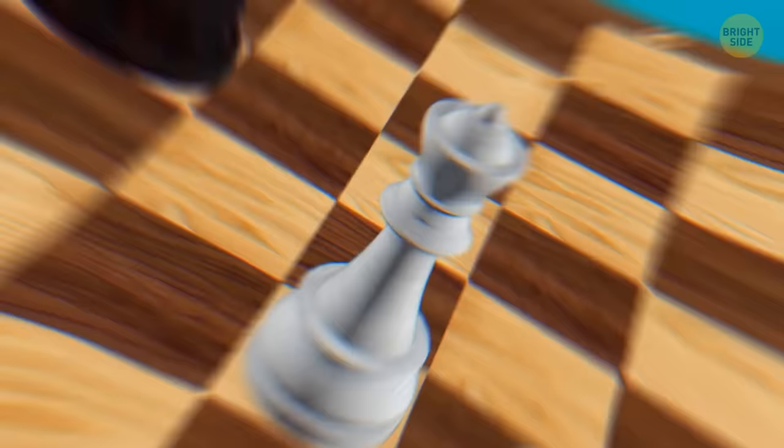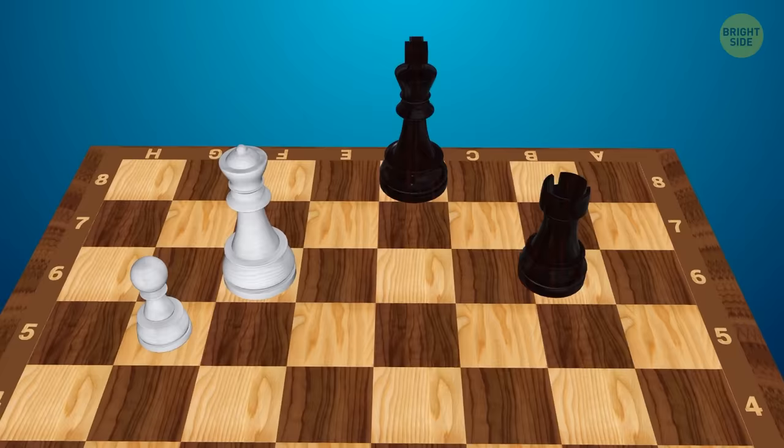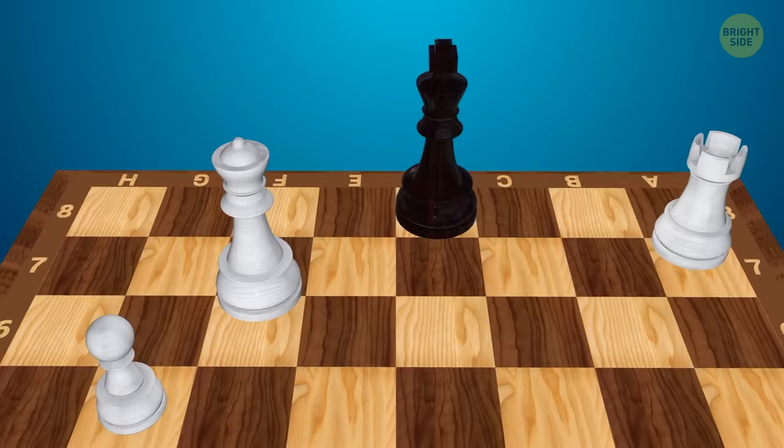Remember that checkmate thing from the beginning? When one of your friend's pieces gets into a position where they could capture the king, it's called check. Then you've only got a couple of options. Use one of your pieces to capture the piece that's threatening your king. Move your king out of harm's way, or move one of your pieces in front of your king to protect him. Once his majesty is in check and you can't do any of those options, the game's over. It's checkmate.